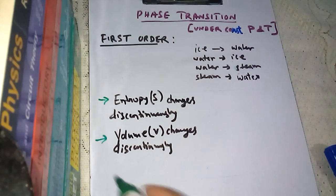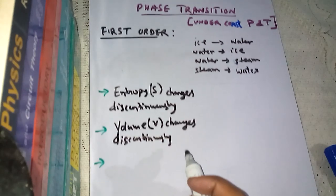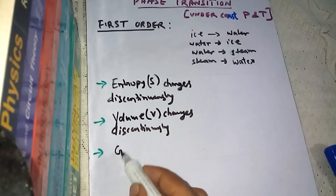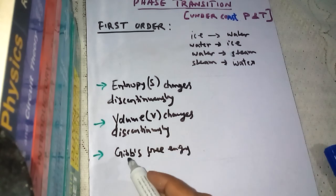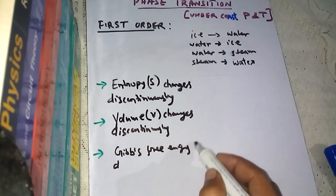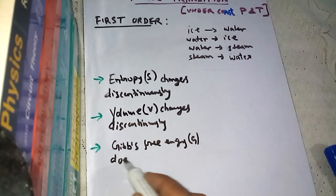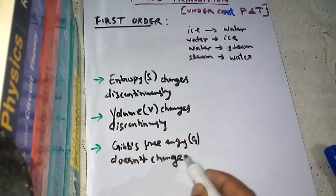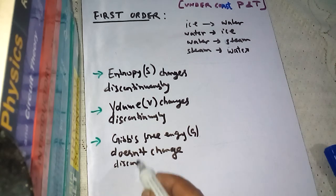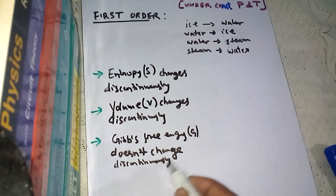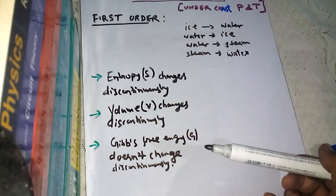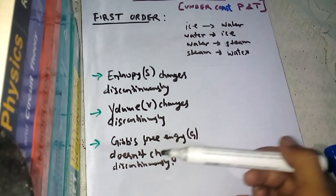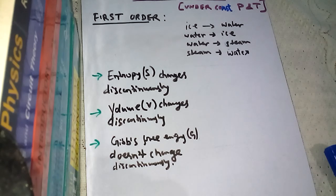The next point is about Gibbs free energy. In first order phase transition, Gibbs free energy — which is a thermodynamic potential — does not change discontinuously. So to summarize: entropy changes discontinuously, volume changes discontinuously, but Gibbs free energy does not change discontinuously. These are three very important points to remember.